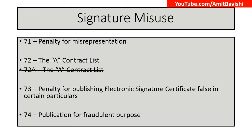The next step is section 74 — publication for fraudulent purposes. If I received an electronic signature certificate and I provided the correct information, and the issuer has also given me the signature with correct particulars, but now I as the holder am using it for fraudulent purposes, then section 74 will be applicable. So to summarize: 71 is for the application stage, 73 is for the issuing stage, and 74 is for having a valid signature but using it for fraudulent purposes.